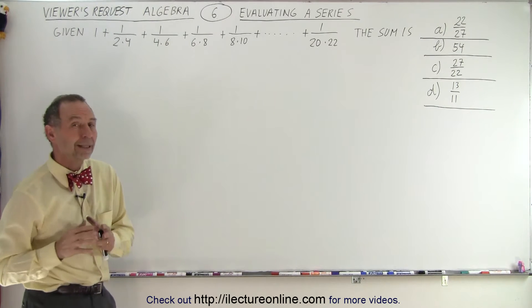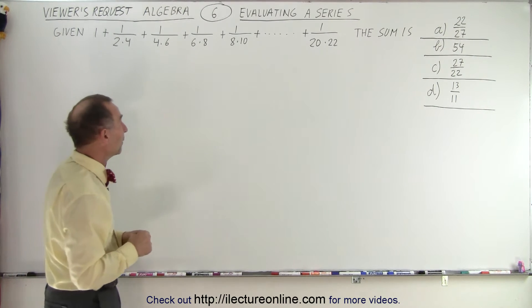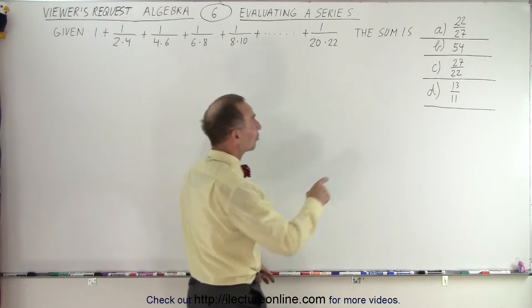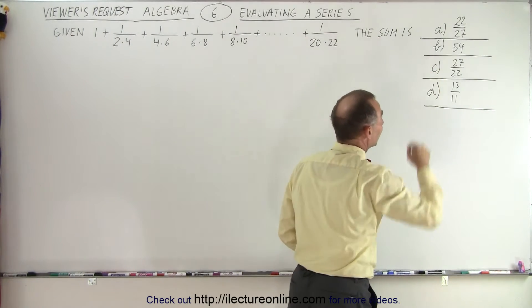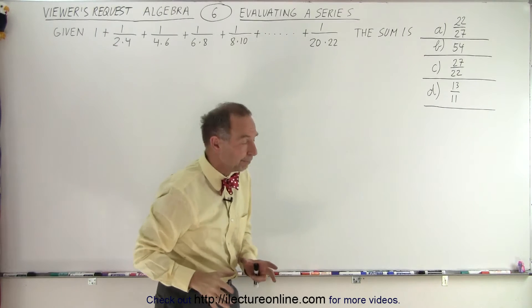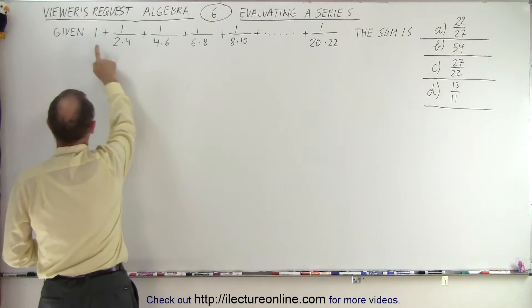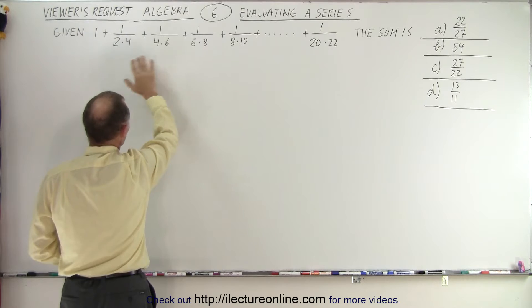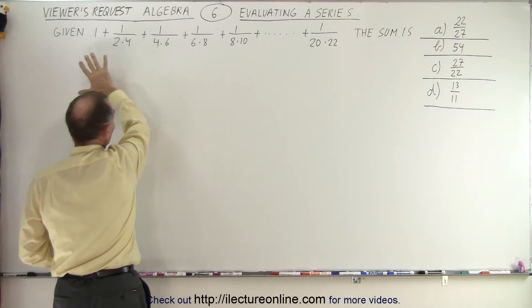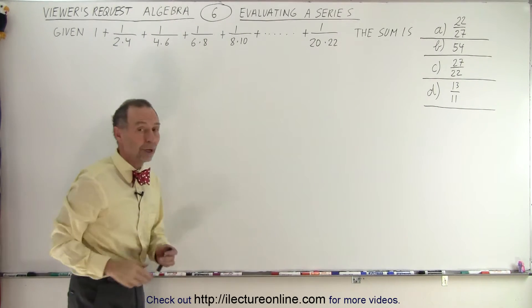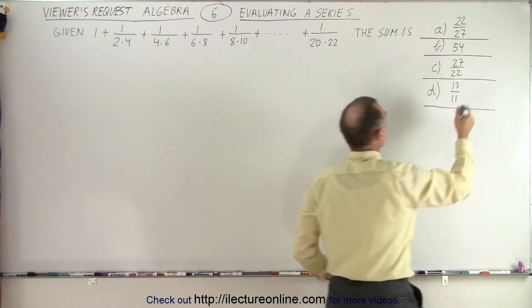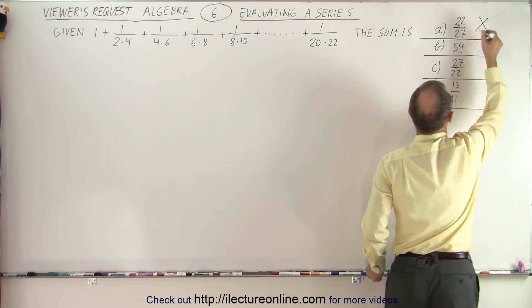For example, we can probably eliminate one or two answers right away. If you take a look at answer A, 22 divided by 27 is less than one. And here we start with the number one and we add additional numbers to that. No matter how small they are, the sum of all this can never be less than one.